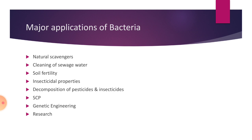Insecticidal properties: we all know that there are insects which are a big threat for agriculture and crops. To control them, we have to use certain insecticides — mainly chemical-based, which are very harmful to nature. There are also natural and biological insecticides. Certain insects are killed by certain bacteria, especially Bacillus forms, like Bacillus thuringiensis. This species can kill nearly 50 different insects which are a serious threat to agriculture, by secreting certain toxins.